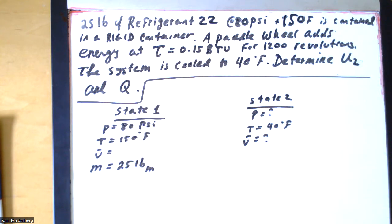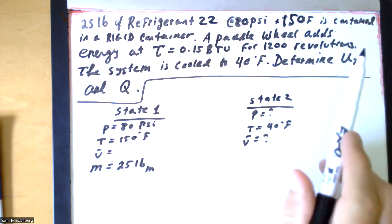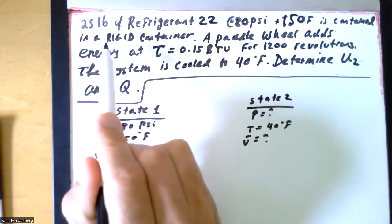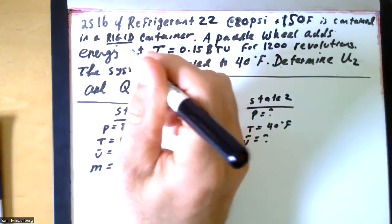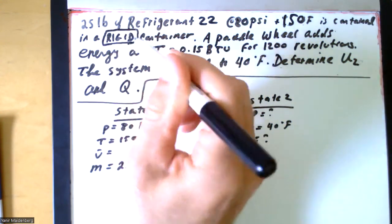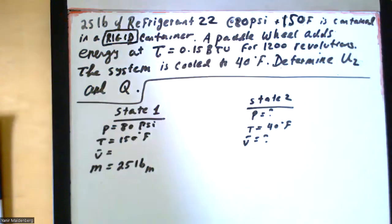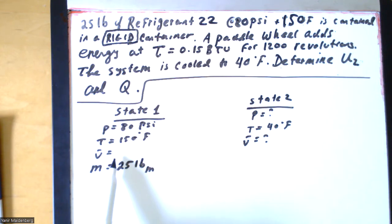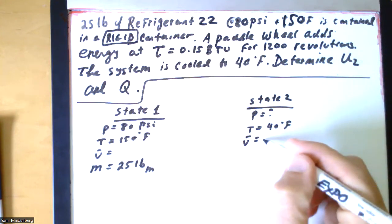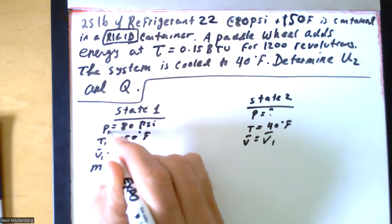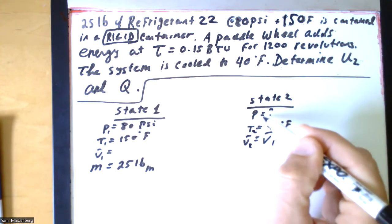Before going to the tables for refrigerant 22, the key thing to note is that it is contained in a rigid container. When you see the word rigid, that should trigger that the volume does not change — think of a reinforced balloon that won't expand no matter how much air you add. So whatever the volume is in state 1, it will be exactly the same in state 2. We know that V2 equals V1.